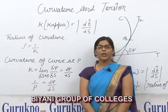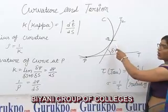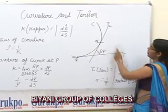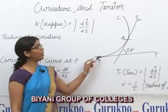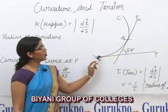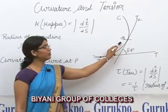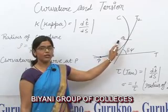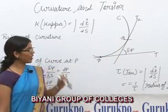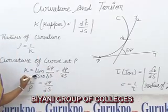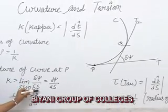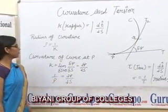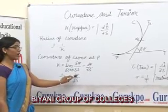Curvature at a point P: suppose P and Q are two consecutive points on curve C, and let psi be the angle between the tangent at P (T) and the tangent at Q (T1). Let P and Q be two points on the curve C such that the arc PQ has length delta s. Let delta psi be the angle between T and T1. Then the average rate of change in the direction of the tangent — we can say kappa is equal to limit as delta s tends to 0 of delta psi upon delta s, or we can write this as dpsi/ds. Or we can write 1 upon rho is equal to dpsi/ds.